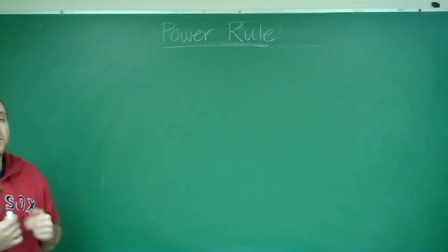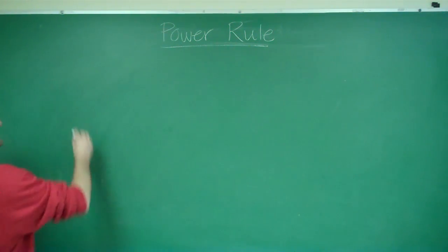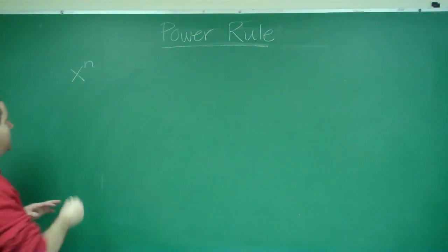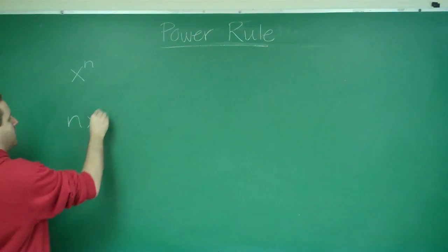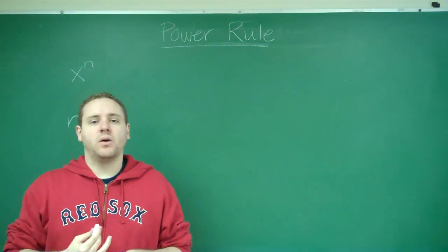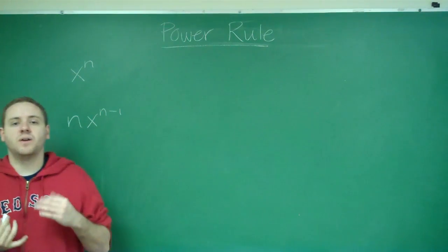So remember that the basic form of the power rule is that when you have a function x to the n, when you take the derivative of that, you bring the n in front and you lower the power by 1.